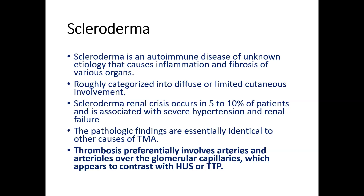Scleroderma is an autoimmune disease of unknown etiology that can cause inflammation and fibrosis of various organs. It can be classified broadly into diffuse or limited cutaneous involvement. Scleroderma renal crisis occurs in 5 to 10% of cases and is always associated with severe hypertension and renal failure. The pathological findings are essentially identical to other causes of TMA, but thrombosis preferentially involves arteries and arterioles over glomerular capillaries — unlike the flagship diseases HUS and TTP, where TMA changes are more prominent in glomerular capillaries.